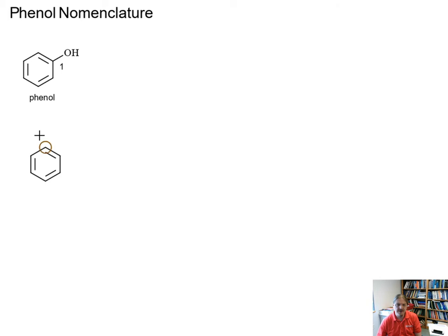To do a couple of quick examples: if I have phenol and another functional group here like chlorine, I would number this one for the alcohol and two for the chlorine. This would be 2-chlorophenol. It's pretty straightforward.